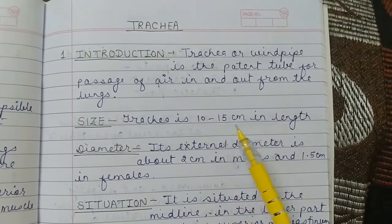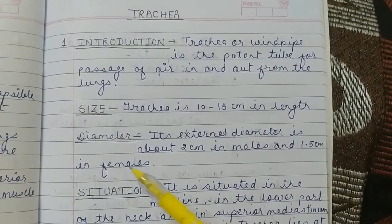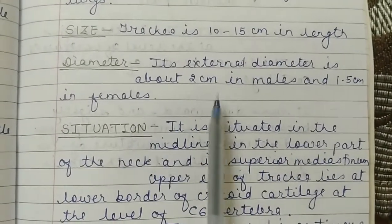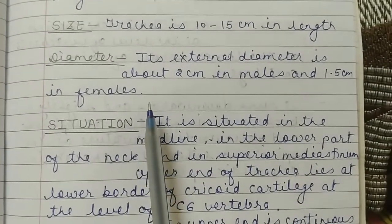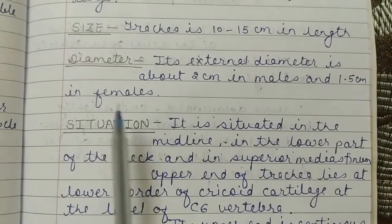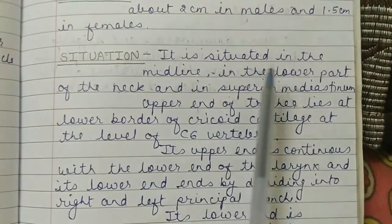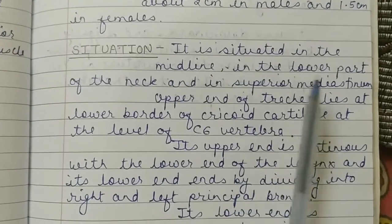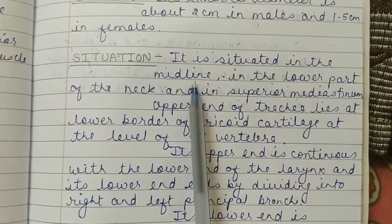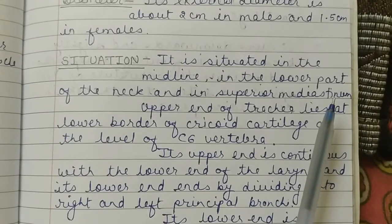Size: Trachea is 10–15 cm in length. Its external diameter is about 2 cm in males and 1.5 cm in females. It is situated in the midline, in the lower part of the neck and in the superior mediastinum.